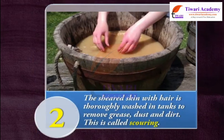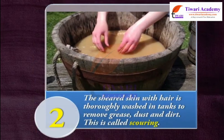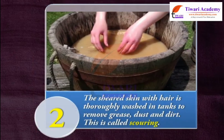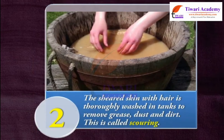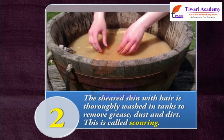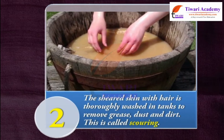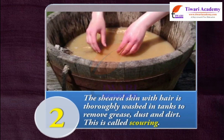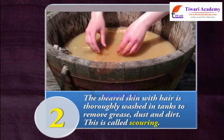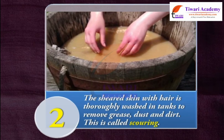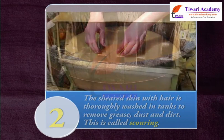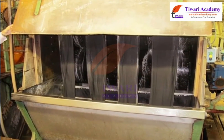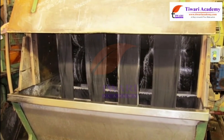Step 2: The sheared skin with hair is thoroughly washed in tanks to remove grease, dust, and dirt. This is called scouring. Nowadays, scouring is done by machines.